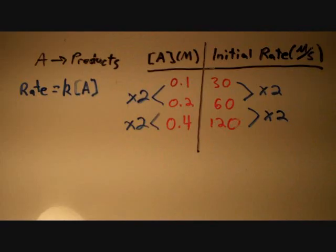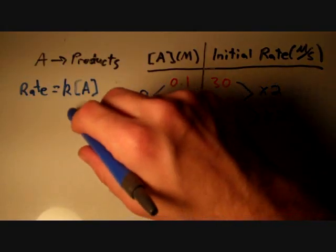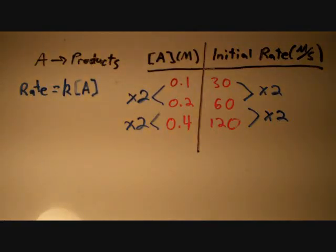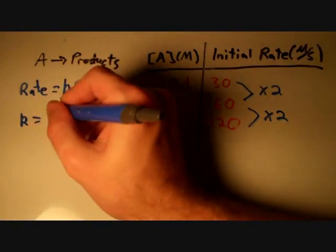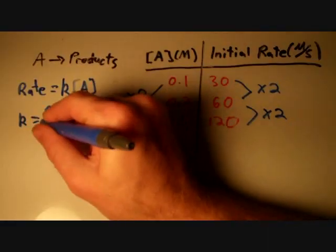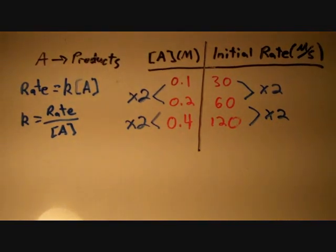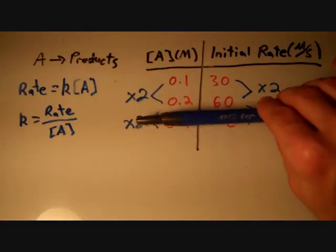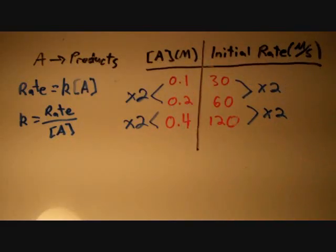We've determined the rate law. Now let's determine the rate constant. Since rate equals k times the concentration of A, we can solve for k algebraically by dividing both sides by the concentration of A, giving us k equals rate over the concentration of A. We can pick any one of the experiments, plug in the respective values, and calculate the rate constant.